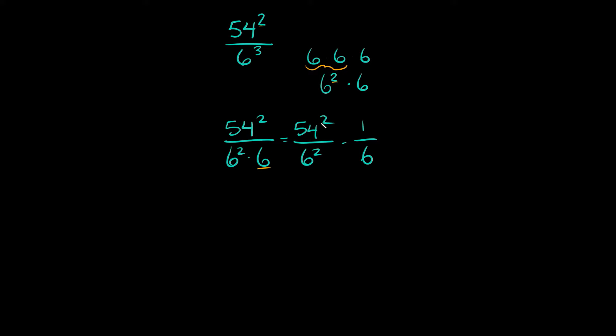So here, as you can see, we have the same exponent, a 2 and a 2, so you can basically just combine this fraction as 54 over 6 all raised to that same exponent, a 2, and again we're still multiplying by the 1 over 6.